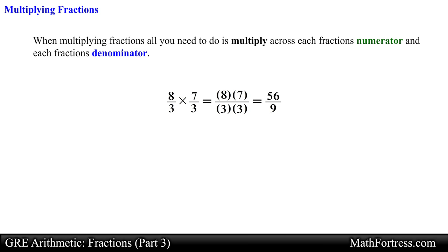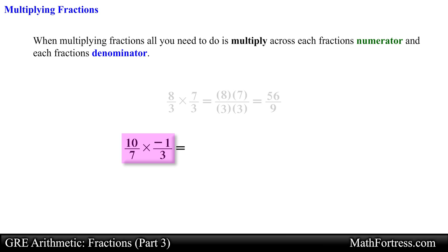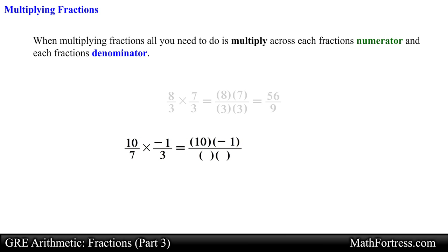Let's go over another example. Say I want to multiply the following fractions: 10 over 7 times negative 1 over 3. Once again, multiplying fractions is fairly straightforward. All we need to do is multiply the numerators together — in this case 10 times negative 1 — and multiply the denominators together — in this case 7 times 3.